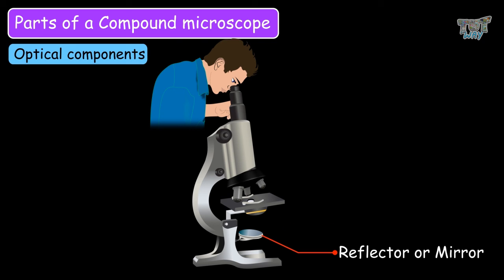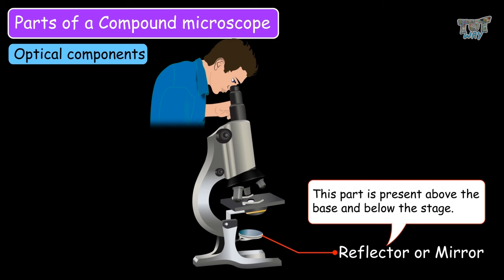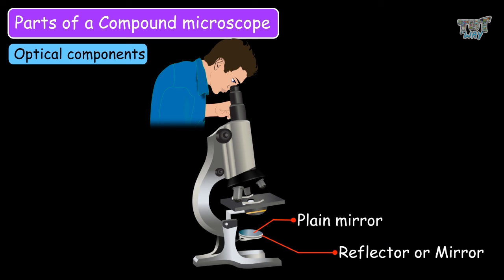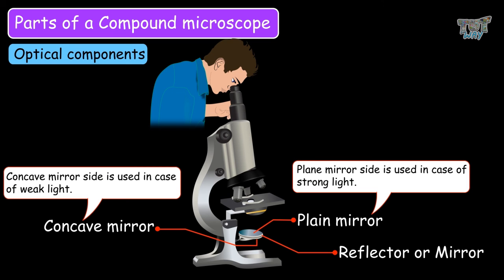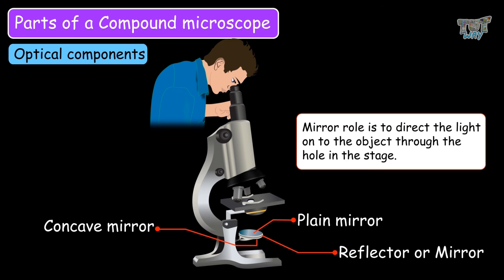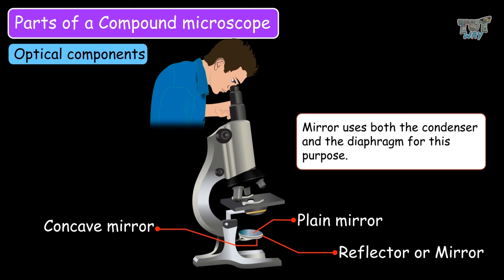The reflector or mirror is present above the base and below the stage. It has two sides: one side is a plain mirror and the other is a concave mirror. The plain mirror is used in the case of strong light, and the concave mirror is used in the case of weak light. Its role is to direct the light onto the object through the hole, using both the condenser and the diaphragm for this purpose.